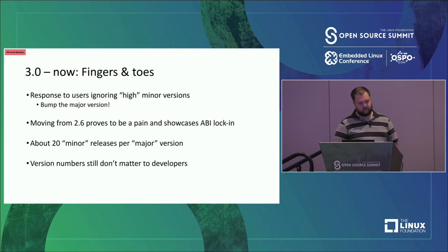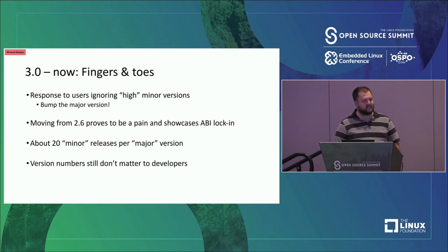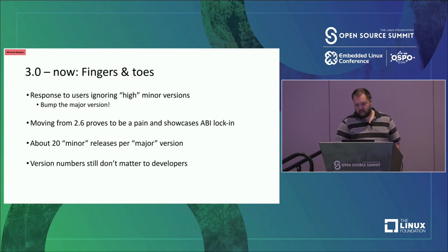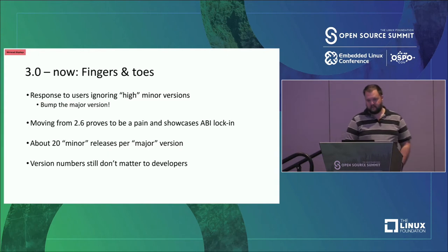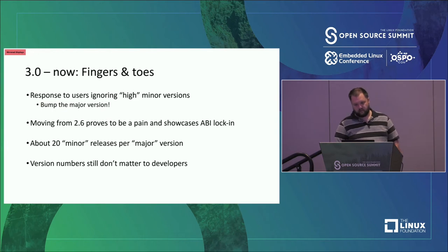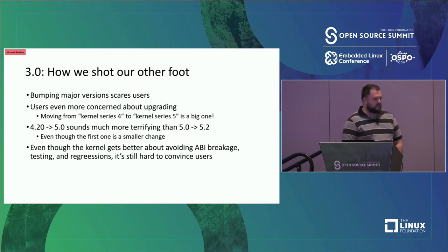When we went from 2.6 to 3.0, we found ABI issues around customers assuming 2.6 would be around forever. We had config options to make the kernel produce a fake version saying it's 2.6.something. After that initial hurdle, things worked mostly well. We do about 20 minor releases per major one — from 3.0 to 3.20, then to 4.0, then oddly 4.21, and then 5.0. Ideally we'll go to 6.0 when we reach 5.20 or so.